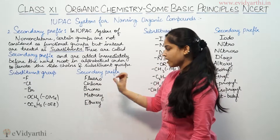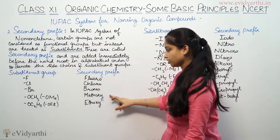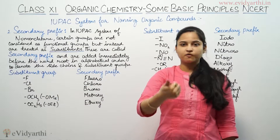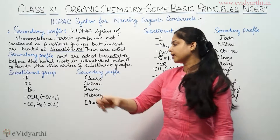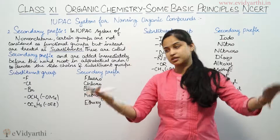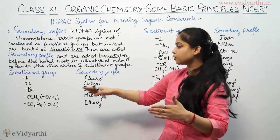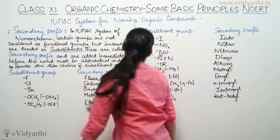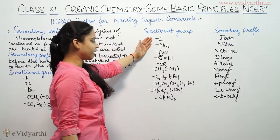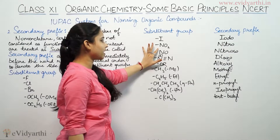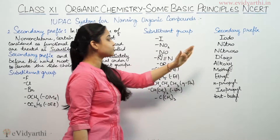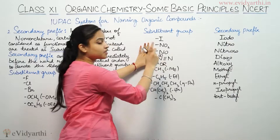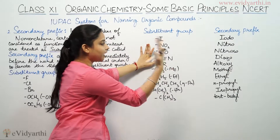If OCH3 is present as a substituent, it is named methoxy — because only one carbon atom is present, it is methoxy. If OC2H5 is present, it is ethoxy. If OCH3... if iodo (I) is present, it is named iodo. If NO2 is present, it is nitro. If NO is present, it is nitroso. And if a diazo group is present, it is named diazo.